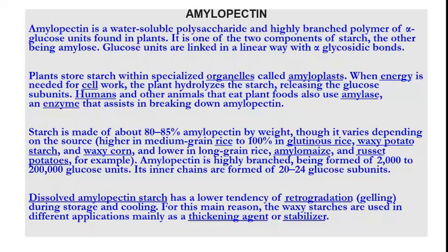Starch is made up of about 80 to 85 percent amylopectin by weight, though it varies depending on the source. It is higher in glutinous rice, waxy potato starch, and waxy corn, and lower in long grain rice, amylo maize, and russet potatoes.